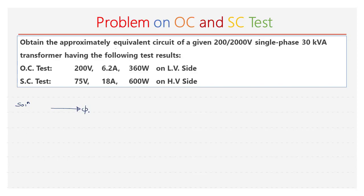First, let me show the phasor diagram of a transformer on no load. Along the reference, the flux φm is taken. The magnetizing current Im is in phase with φm, and the core loss component current Ic makes an angle of 90 degrees with the magnetizing current. Taking the resultant of these two, we get the current I0. Along Ic we have the voltage V, and the angle between V and I0 is φ0. Let me call the triangle as OAB.